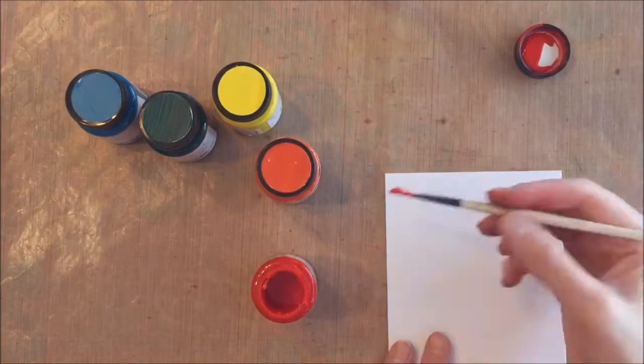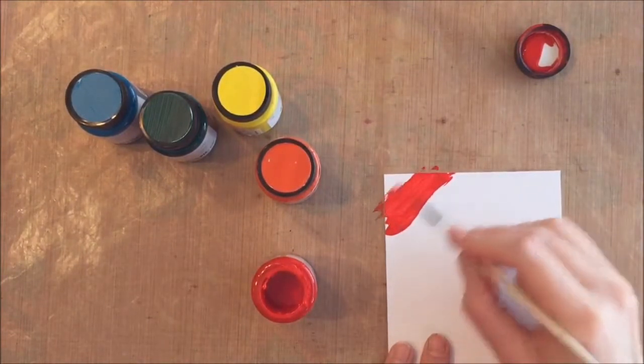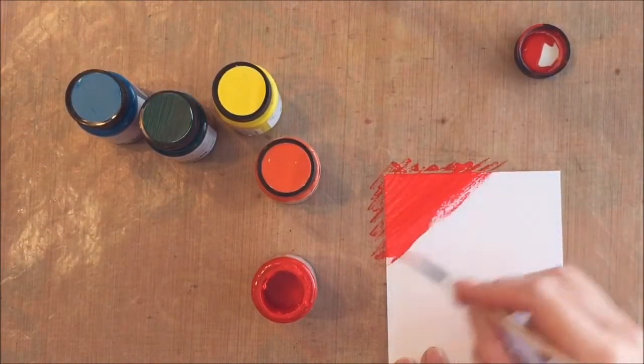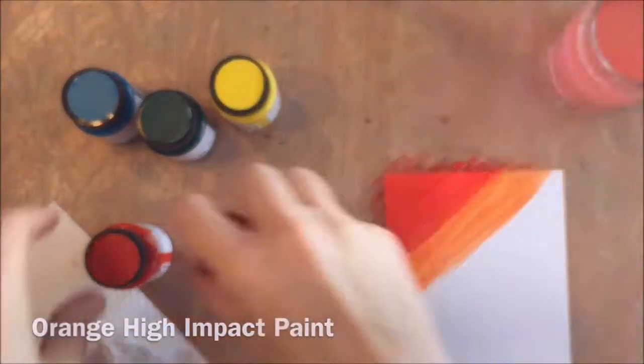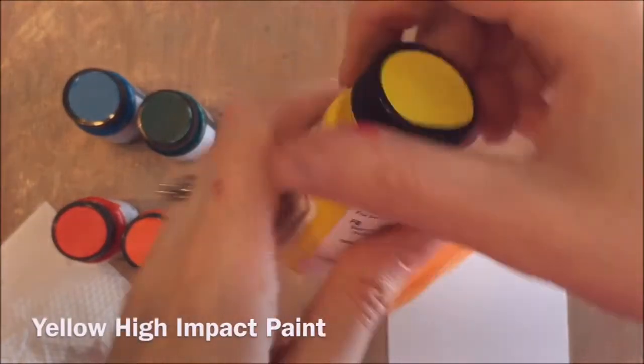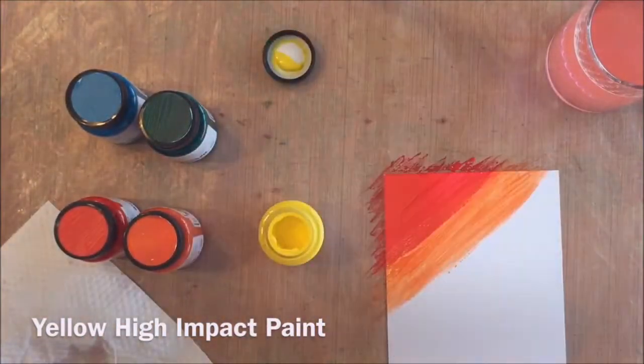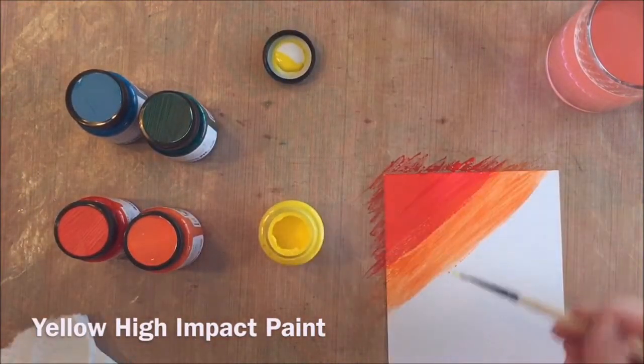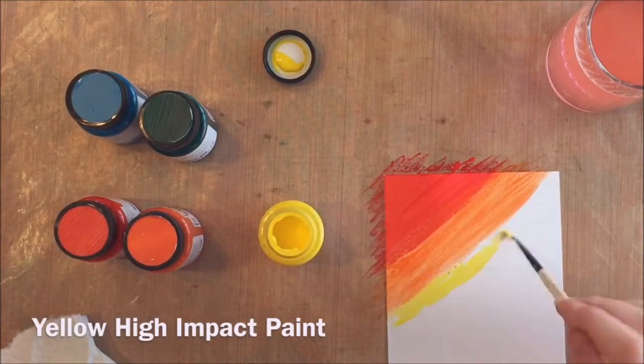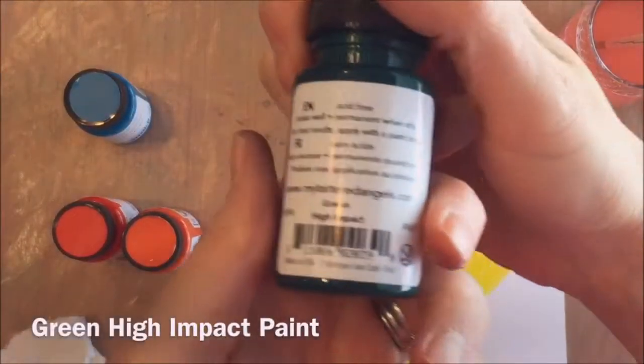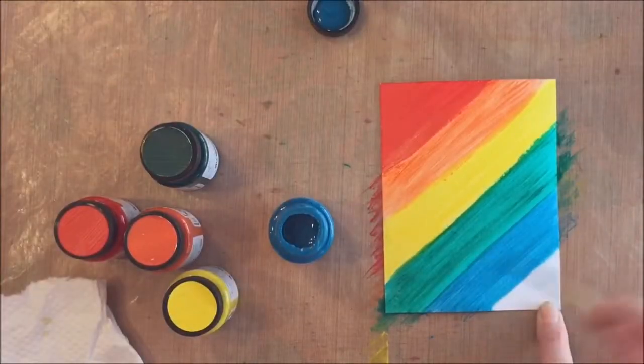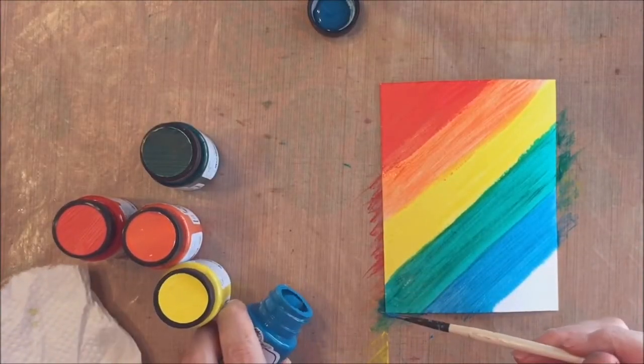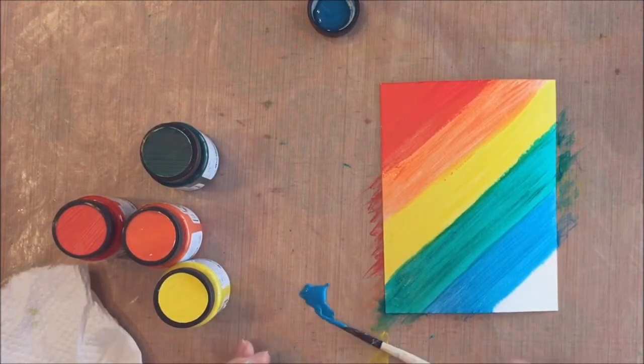For the fourth one we're doing a rainbow painted background. We've got red, orange, yellow, green and turquoise high impact paint and I'm painting these on the Bristol cardstock and this is just a heavier weight. You can use paints and watercolors and the paint really just goes on so smoothly. This high impact paint is lovely.